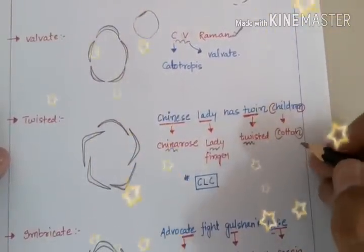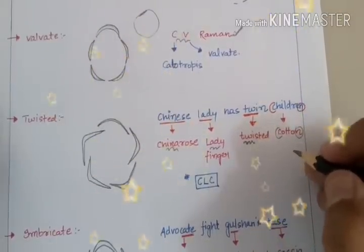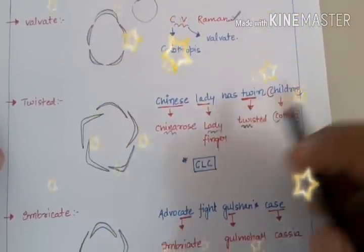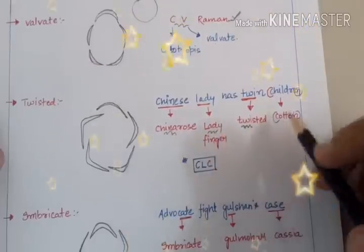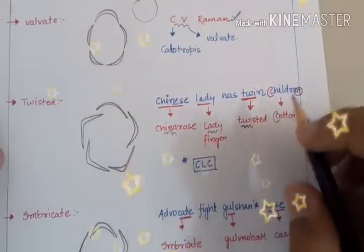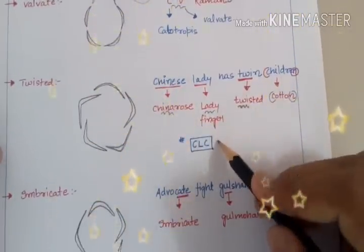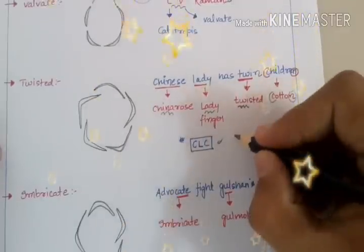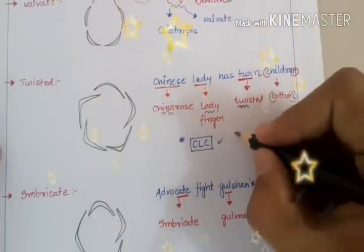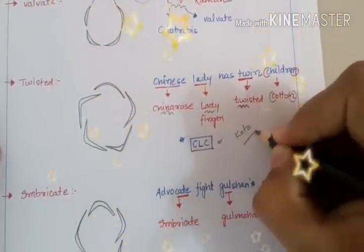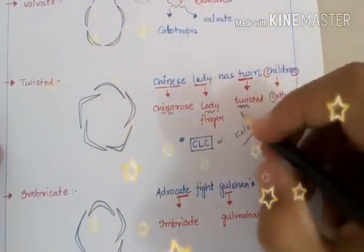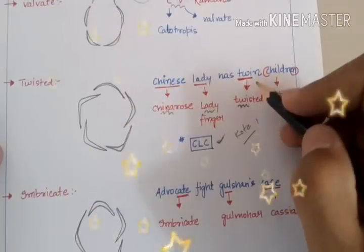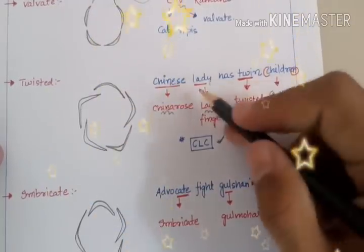These are the major examples asked in entrance examinations: China rose, lady finger, and cotton show Twisted Estivation. You can also memorize it using the trick CLC, which is the name of a coaching institute for pre-medical entrance examinations in Kota, if you don't want to use the sentence.